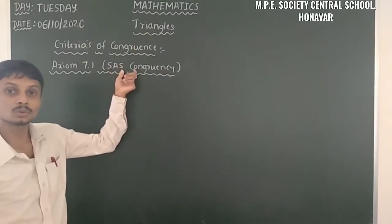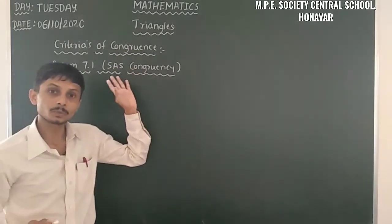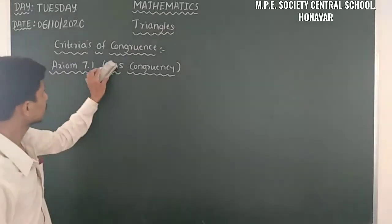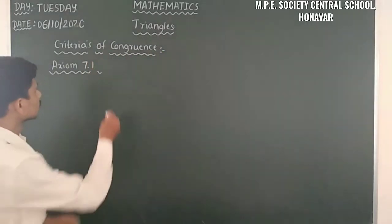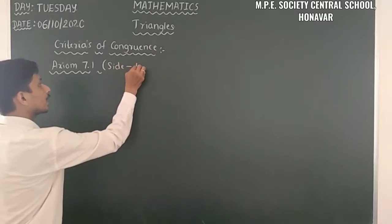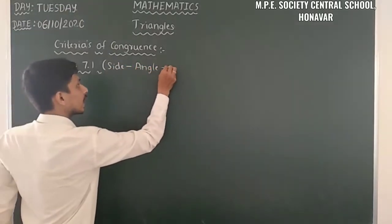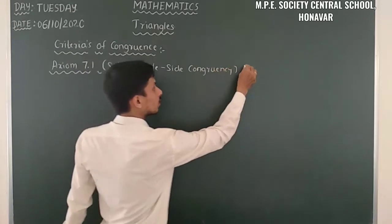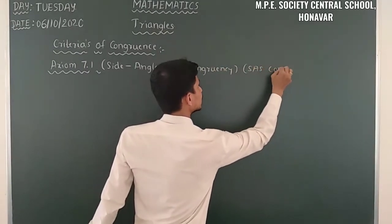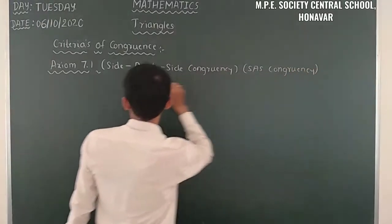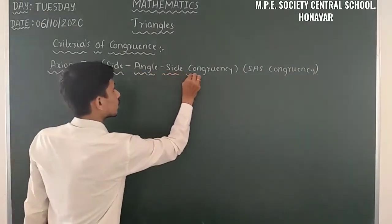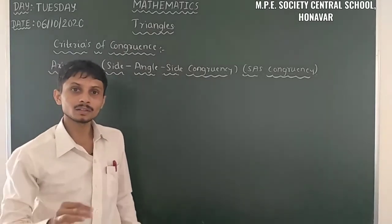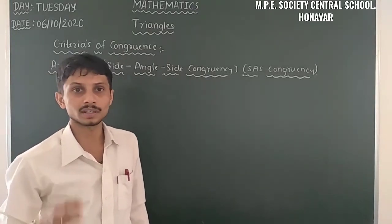SAS means Side-Angle-Side: two sides and one angle. We need two sides and one included angle. That is Side-Angle-Side congruency, also called SAS congruency. Axiom 7.1, or Side-Angle-Side congruency, tells us the condition for two triangles to be congruent.